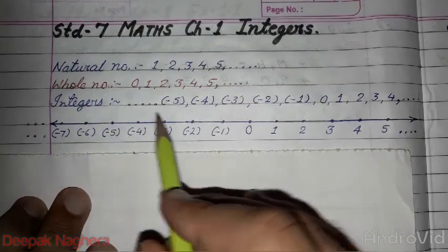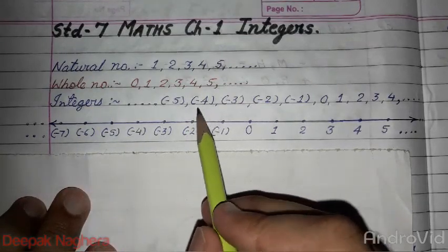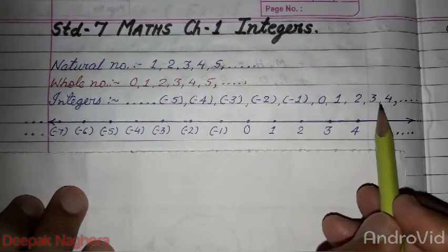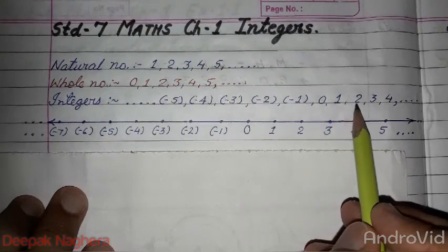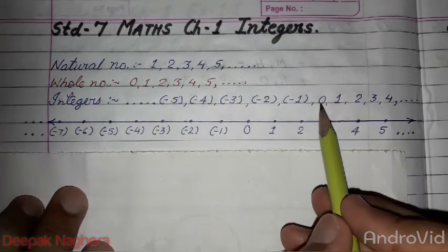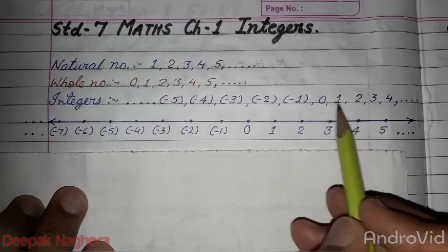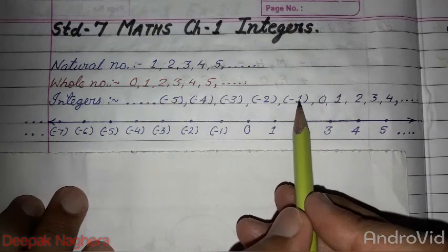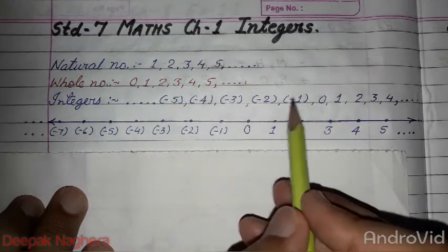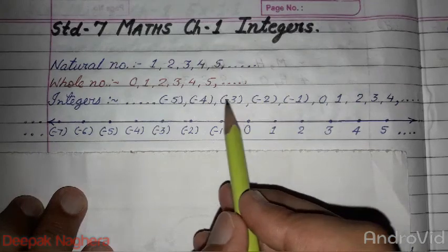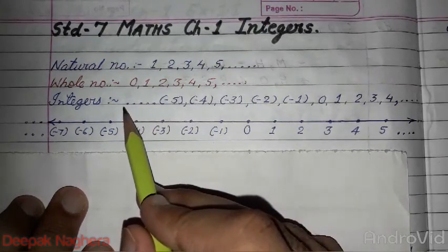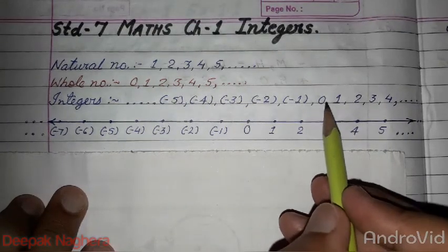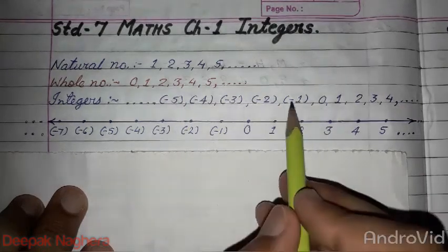Now the main topic: what are integers? Integers are such numbers which include whole numbers. I'm including whole numbers because natural numbers are already included, so no need to mention natural numbers separately. Zero, 1, 2, 3, 4, 5, 6, like this way. And some other numbers shown here are negative numbers: minus 1, minus 2, minus 3, minus 4, minus 5, minus 6, and so on.